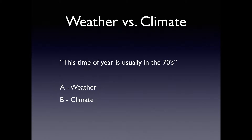How about 'this time of year is usually in the 70s'? Because we're talking about an average condition — aggregate or average conditions — we're going to call that a climate statement.